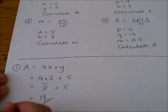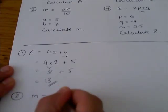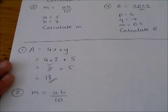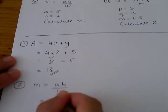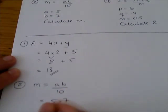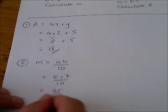For answer number 2, you needed to do a times b divided by 10. A was 5, b was 7. So, we had 5 times 7 divided by 10. That's 35 divided by 10, which is 3.5.